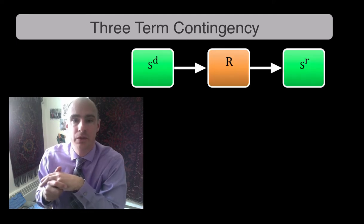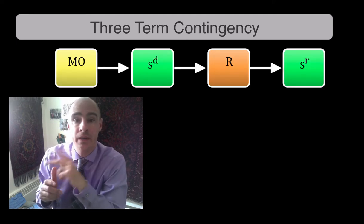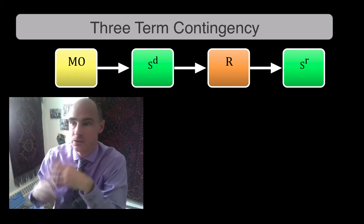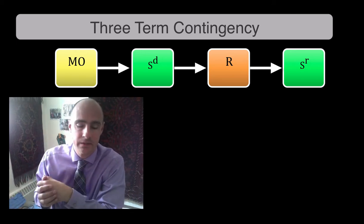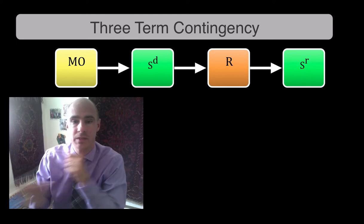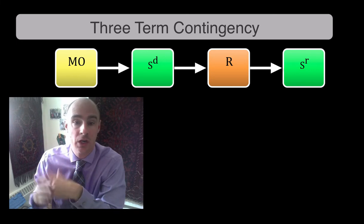Now let's add in another one. Motivating operations. MOs. There's two types, right? An EO and an AO. And then there's more breakdowns than that. You get the CMEOs and all that stuff. So we're just going to call it an MO to make it easy, right? MOs typically come in the three term contingency. They're placed before the SD. So it typically reads MO, SD, R, SR.